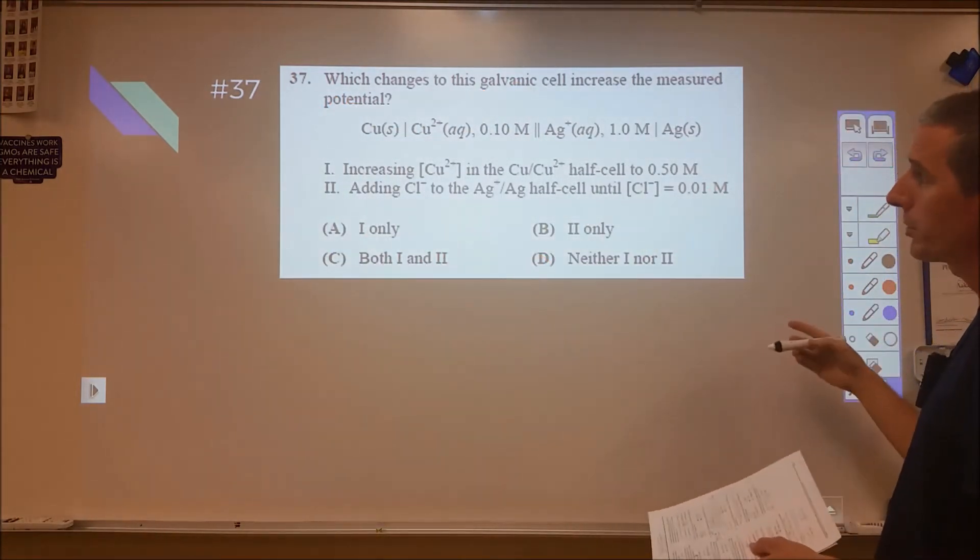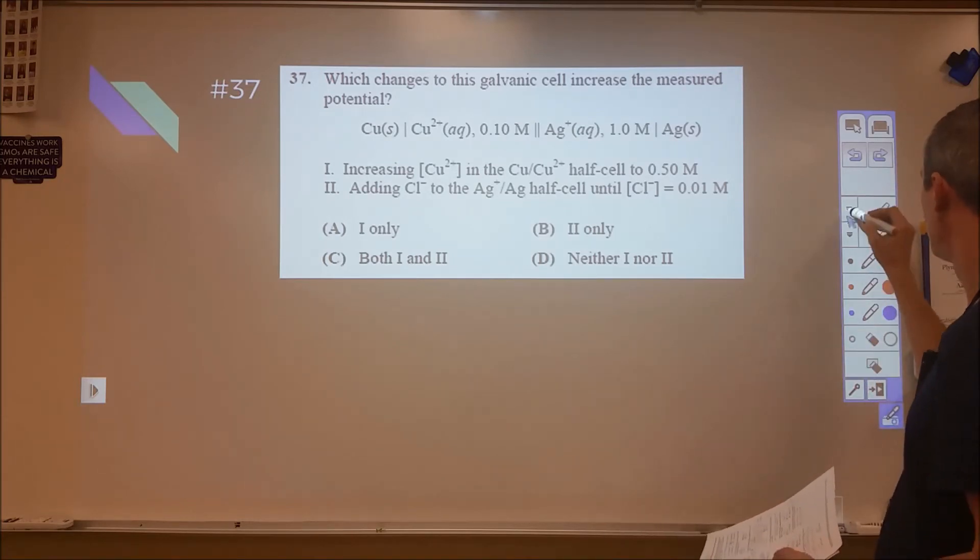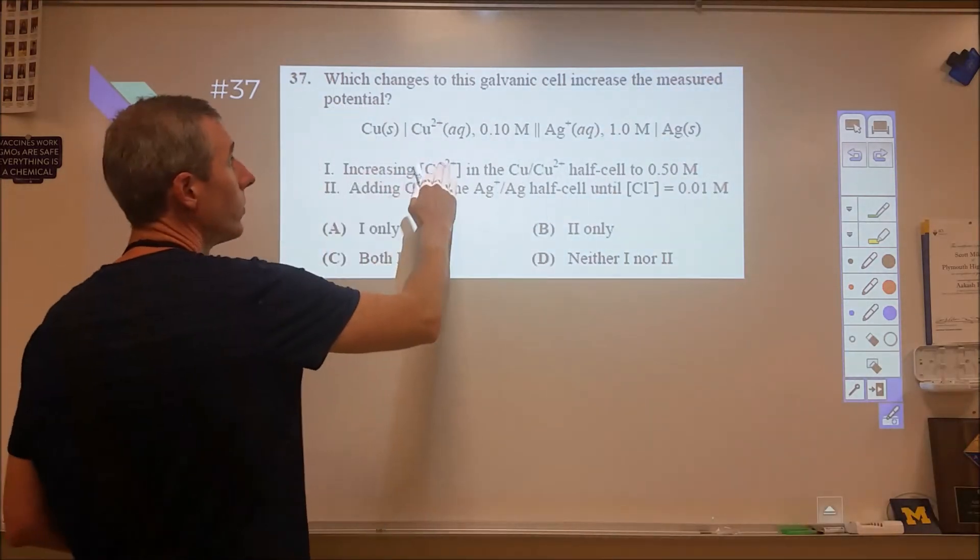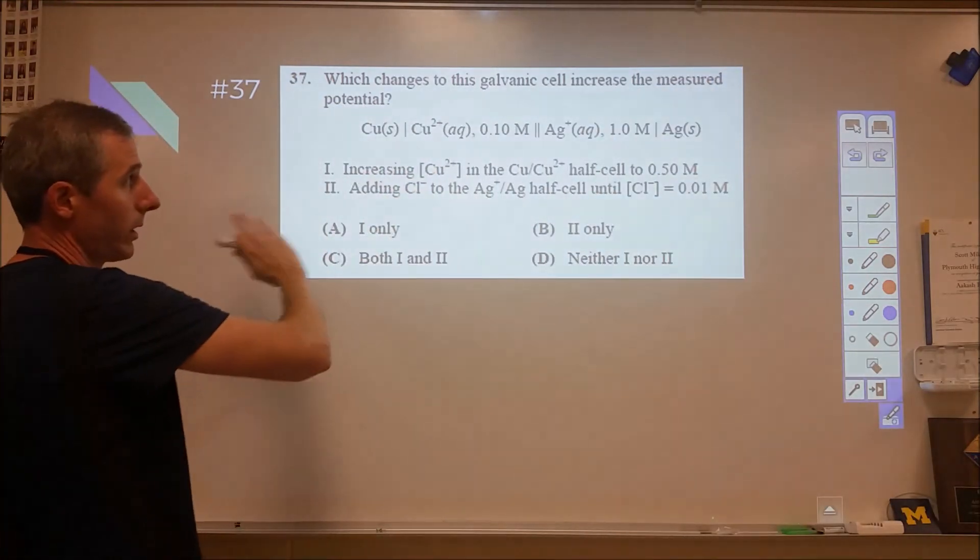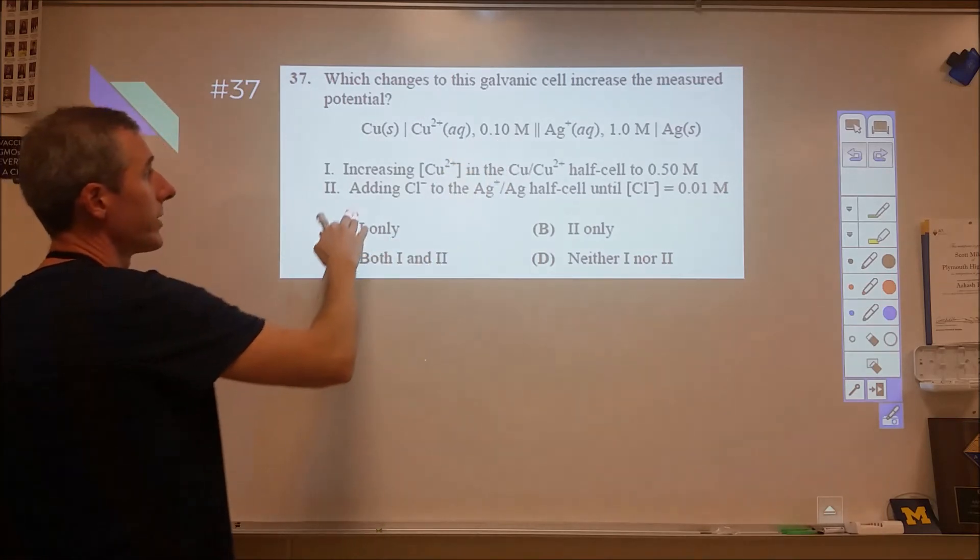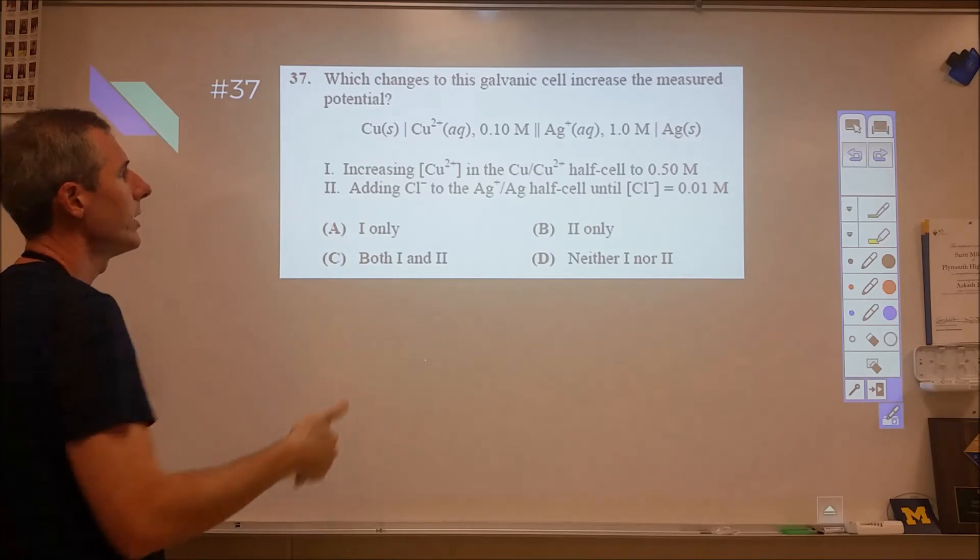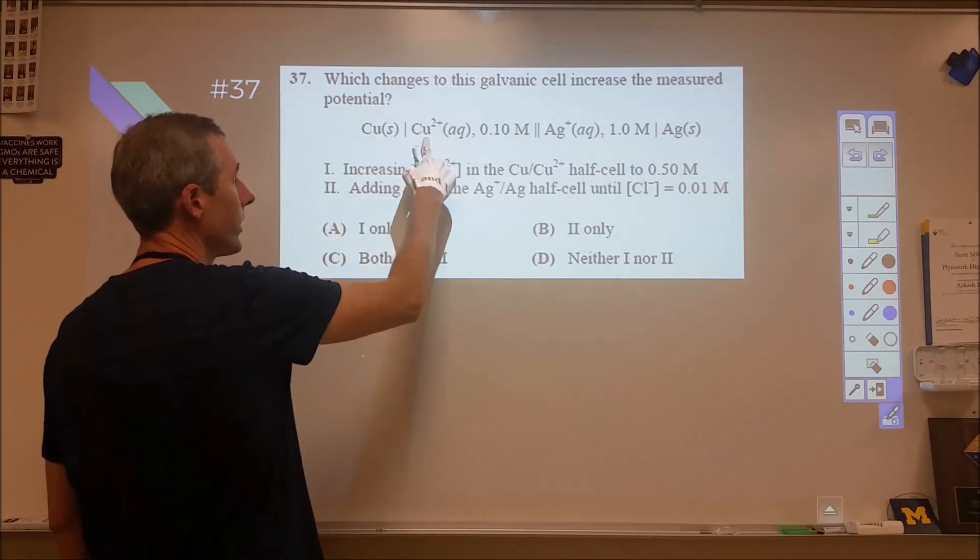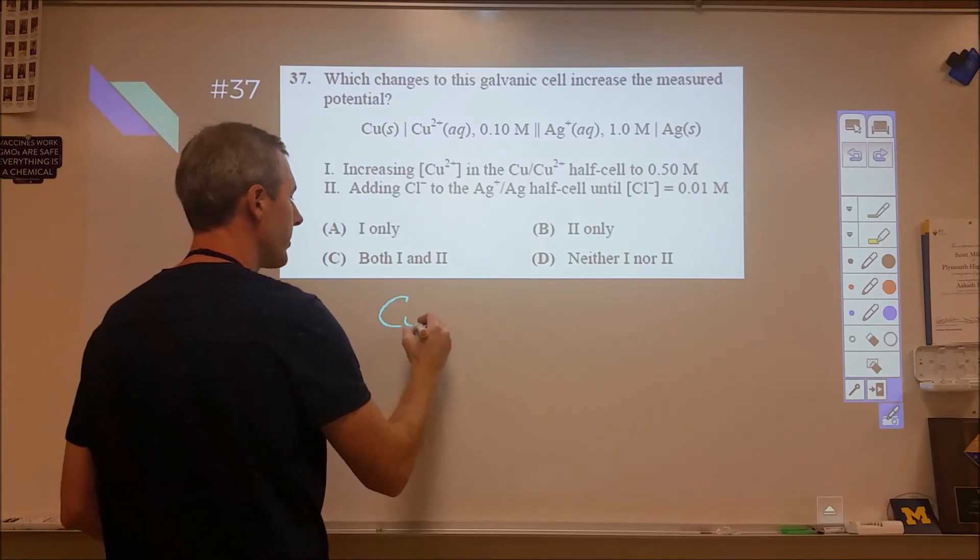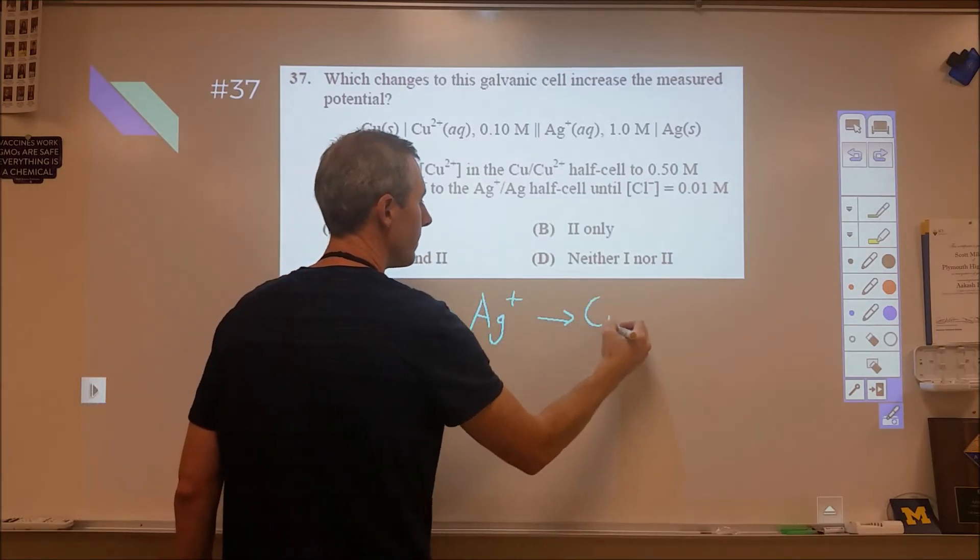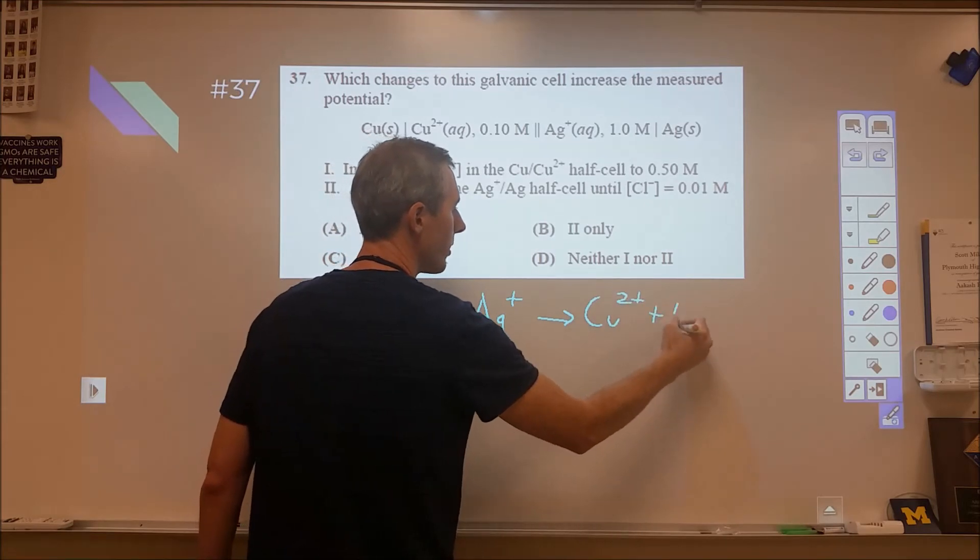Problem 37, we have an electrochemistry question, but really this is a Le Chatelier's principle one. Let's do the analysis here. So we're starting with a battery. It's non-standard conditions because this is not one molar. And then it says which one will increase the measured potential? So if we're looking at copper turning into copper 2 plus, and silver plus turning into silver. Here's our unbalanced reaction. And of course, to balance it, we just need two's on the silver.